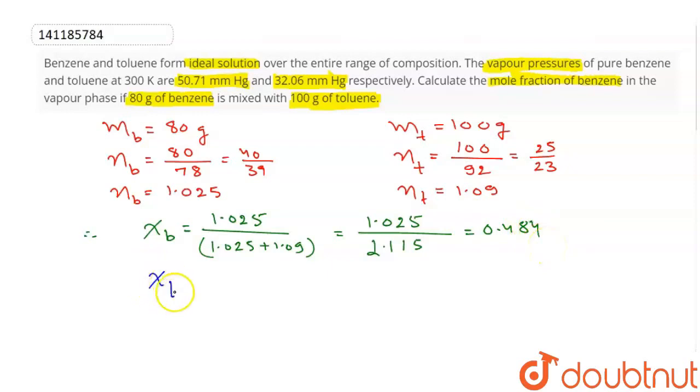How will we determine the mole fraction of toluene? Subtract it from 1. The mole fraction of toluene is 1 minus 0.484 equals 0.516. We have these two mole fractions.